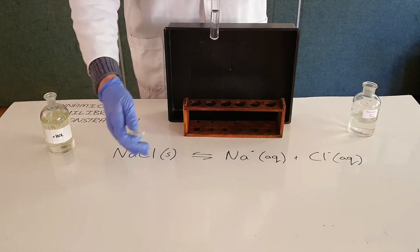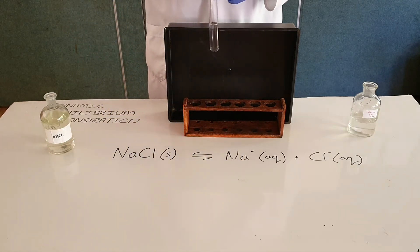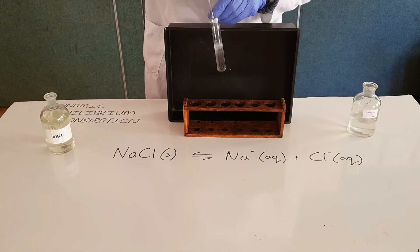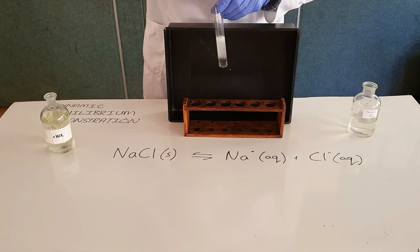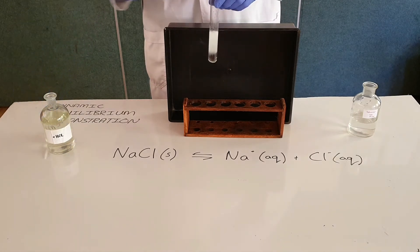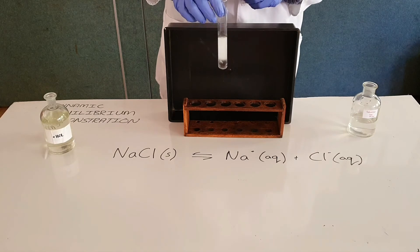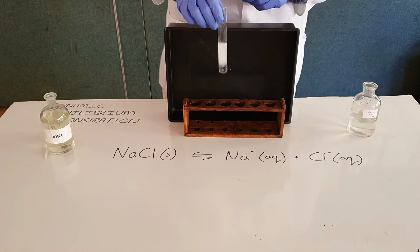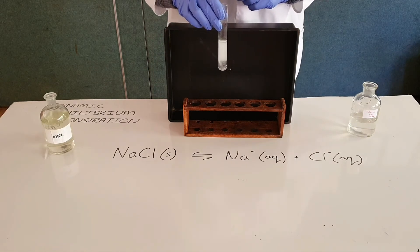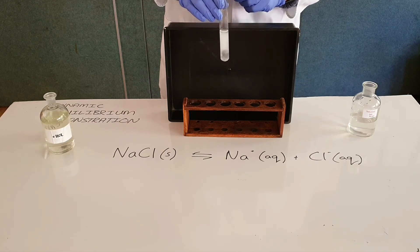We would expect to favor the reverse process, which produces more sodium chloride. We can see that in the form of a white precipitate — the solution goes cloudy, and that precipitate drops out and falls to the bottom of the test tube.